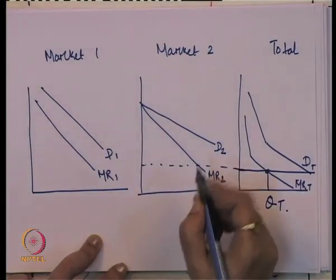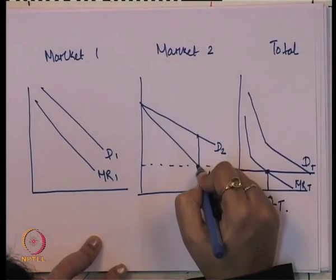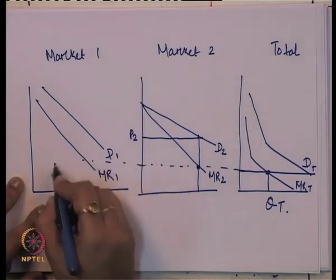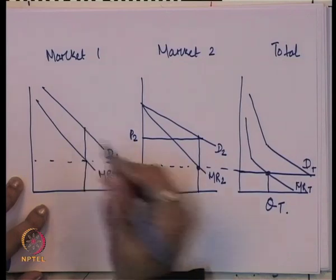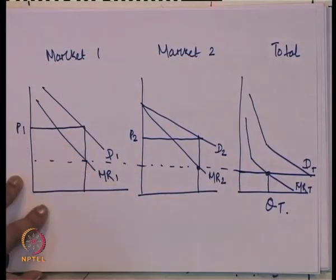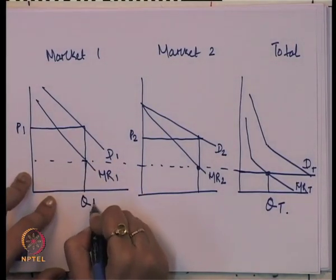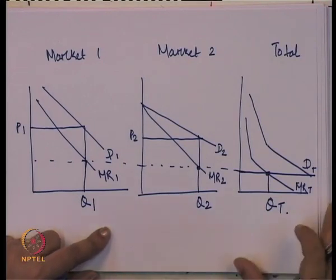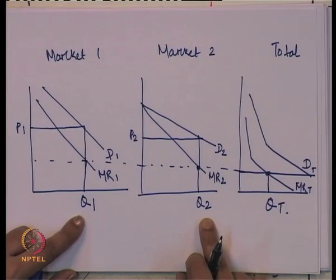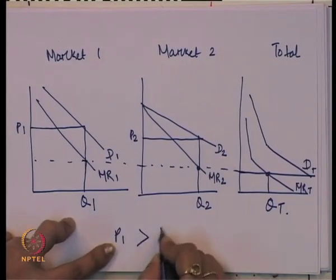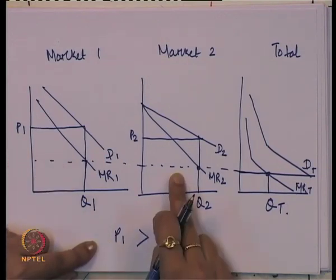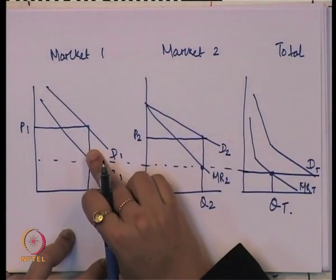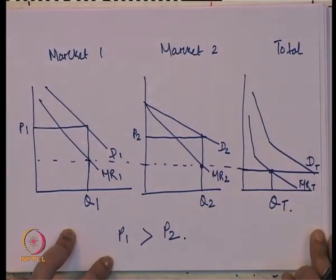Taking the marginal cost, and equating marginal revenue and marginal cost, the price is decided in the second market as P2. Taking the same cost function, we decide the price in the first market as P1. By following P1 in market one, Q1 has to be produced and sold; and in market two, Q2 has to be sold. Price P1 is higher than P2 because market one is the inelastic market and market two is the elastic market.